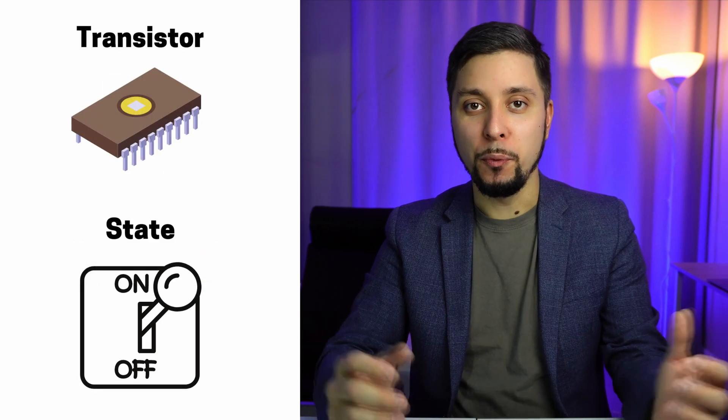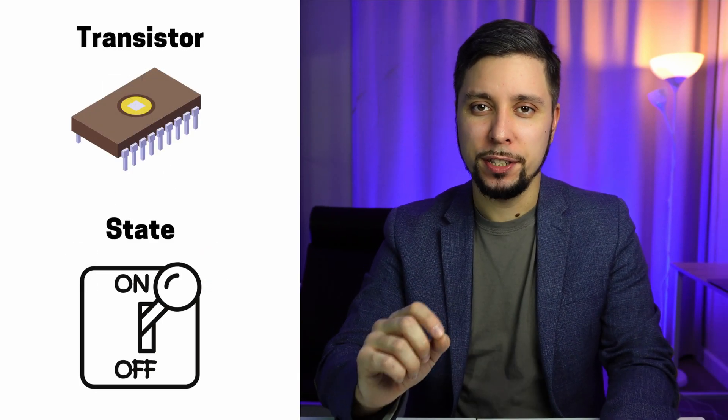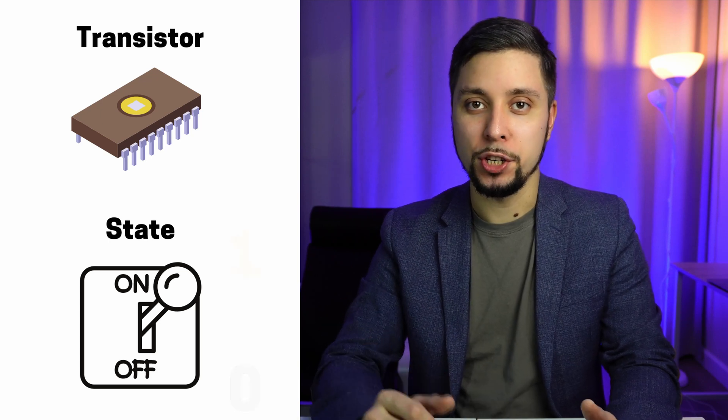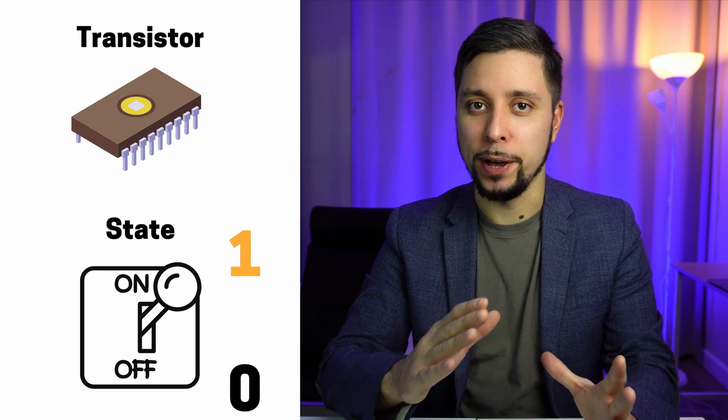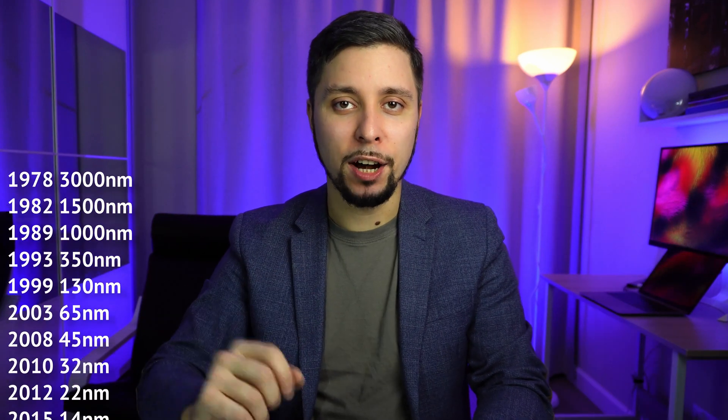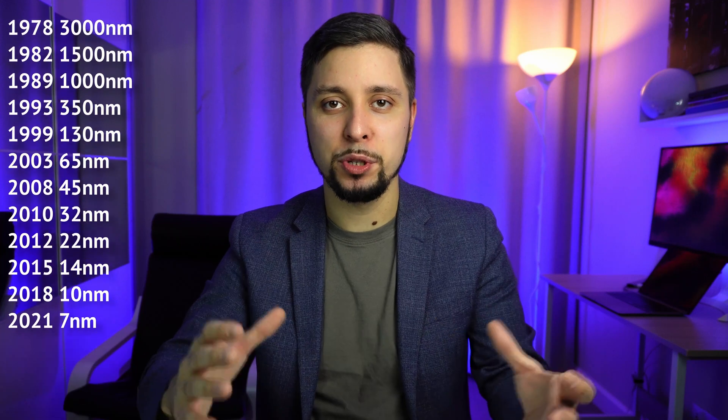In the CPU we have transistors, which are small switches that can be either in the ON or OFF position. In the ON position they allow current to pass through; in the OFF position that behavior is terminated. Starting from a simple calculator program all the way up to very difficult physics simulations — for example, thermal combustion reservoir simulation — everything can be reduced into those bits of information. We are making CPUs faster by packing more transistors and reducing their size.